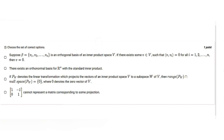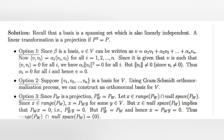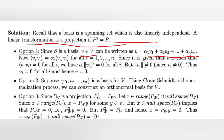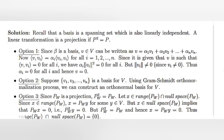Here are the solutions. Recall that a basis is a spanning set which is also linearly independent, and a linear transformation is a projection if P² = P. For option 1: since β is a basis and v belongs to V, we can write v = a1*v1 + a2*v2 + ... + an*vn. Then the inner product of v and vi equals ai * ||vi||² for all i. Since v is such that the inner product of v and vi = 0 for all i, we have ai * ||vi||² = 0 for all i. Since vi ≠ 0, ai = 0 for all i, hence v = 0.